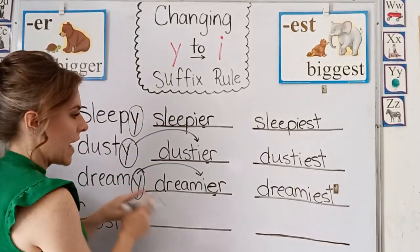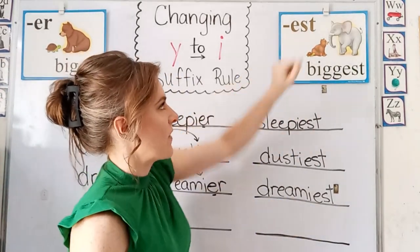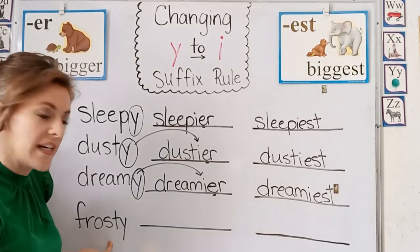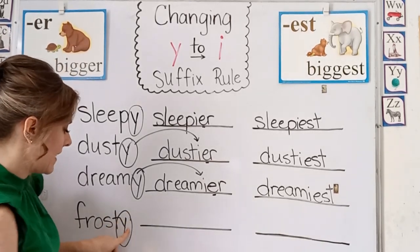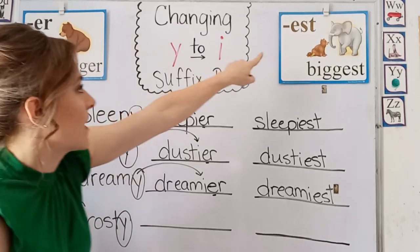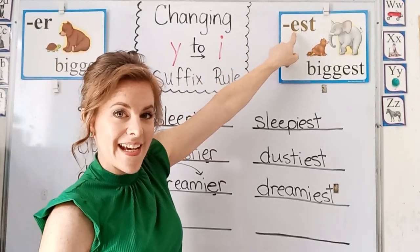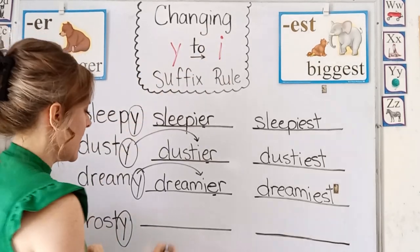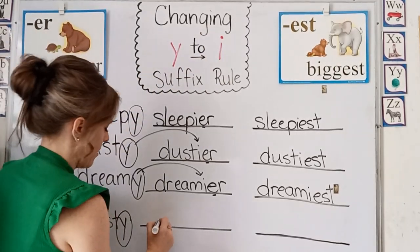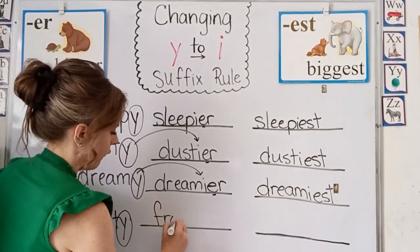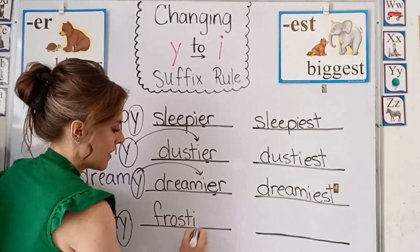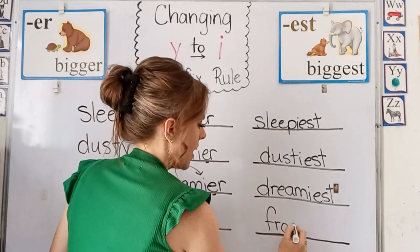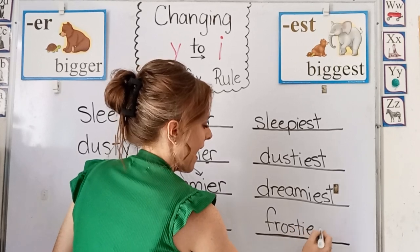Change the Y to an I before adding the suffix that begins with an E. And our last one is frosty. We do have a Y at the end and we're going to add our suffixes that begin with an E, so we're going to change that Y to an I and then add our suffix. Frostier and frostiest.